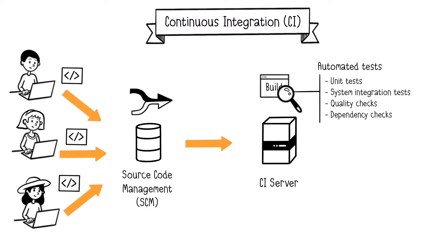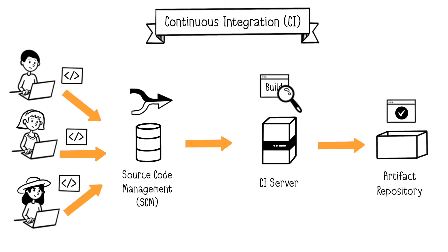Then, dependency checks ensure that the third-party dependencies used don't contain known vulnerabilities. Tools like JFrog X-Ray are used for this. If issues are found, the code is sent back to development for bug fixing. However, if the automated tests are successful, the new build is validated and archived in an artifact repository — for example, JFrog Artifactory or Docker image repositories. Now that the new build is centralized and versioned, it's ready for deployment, and the entire process is repeated whenever there is new or changed code.